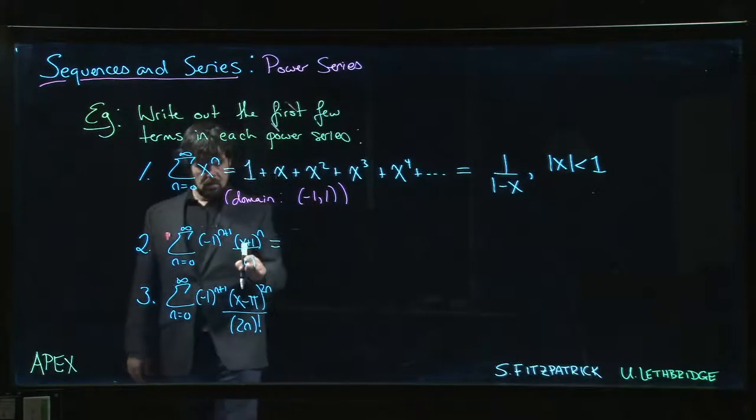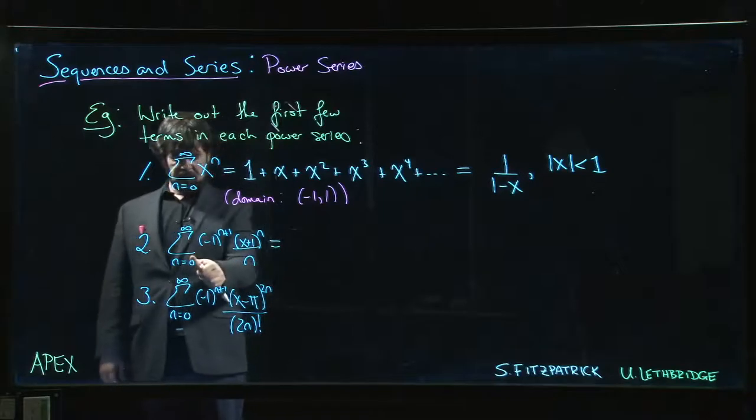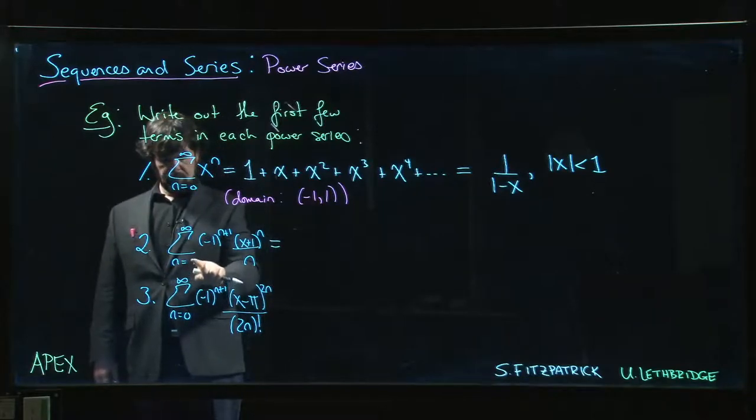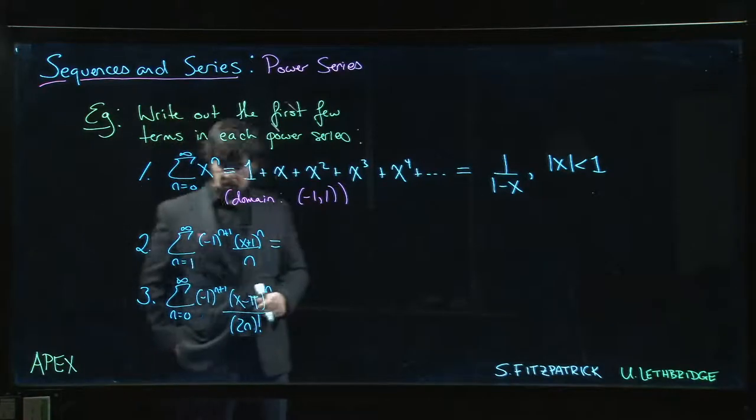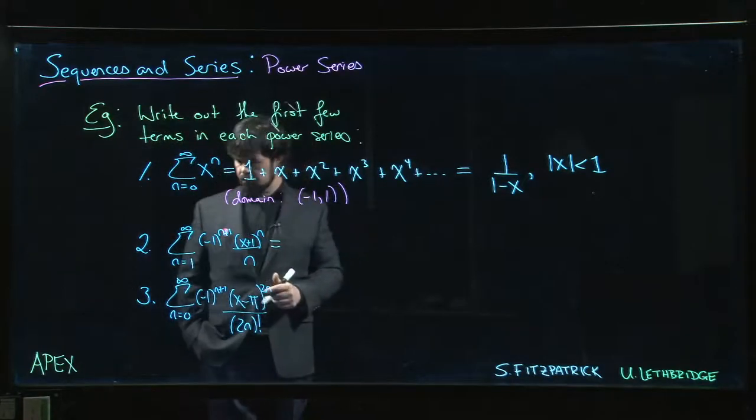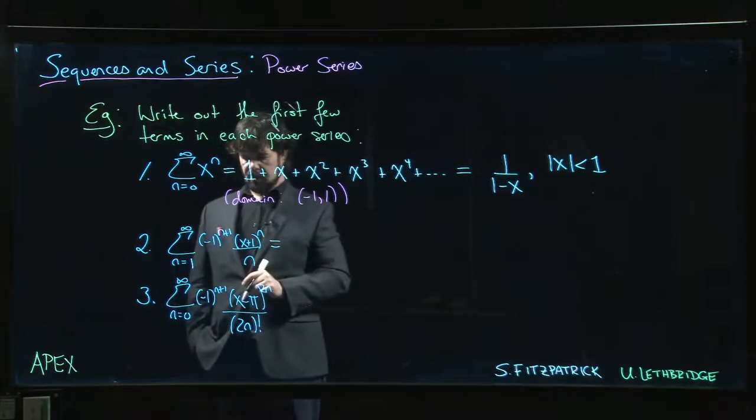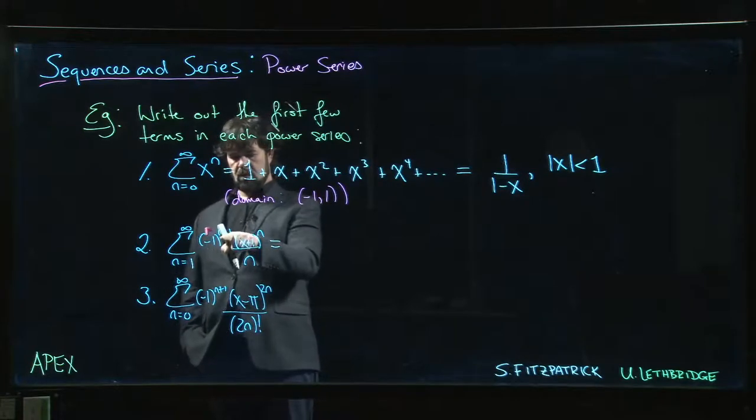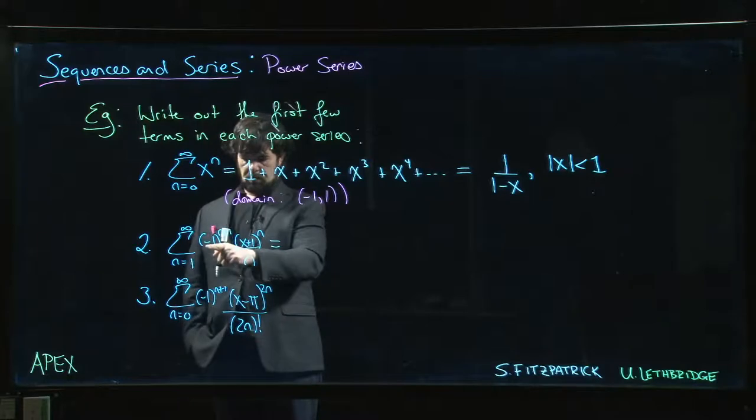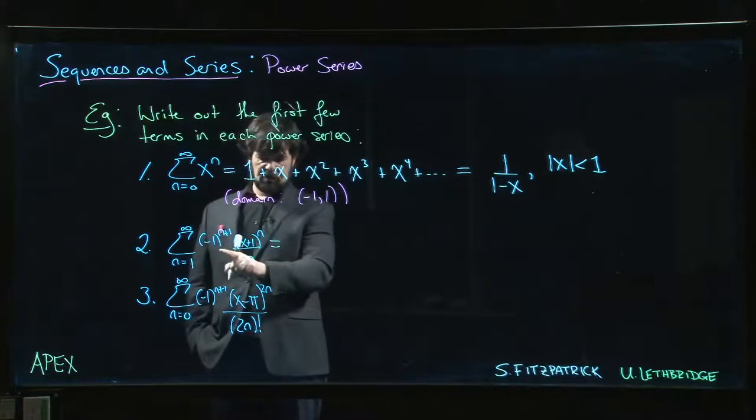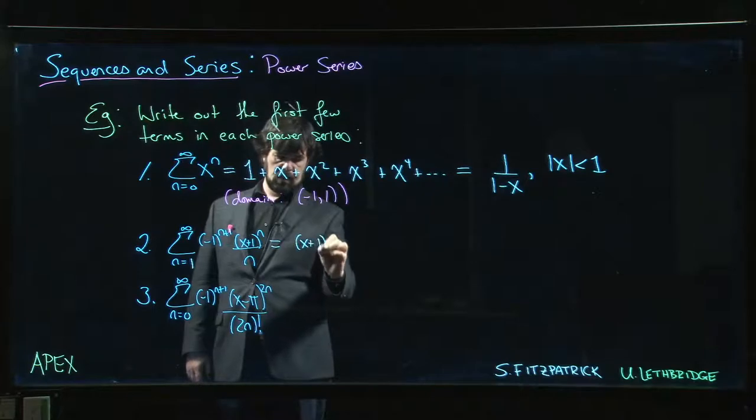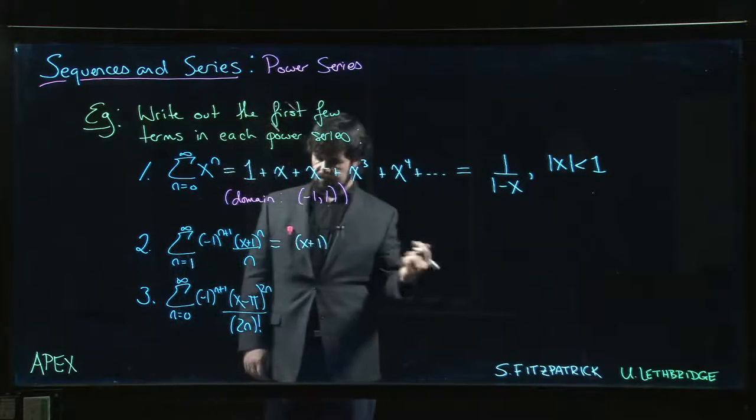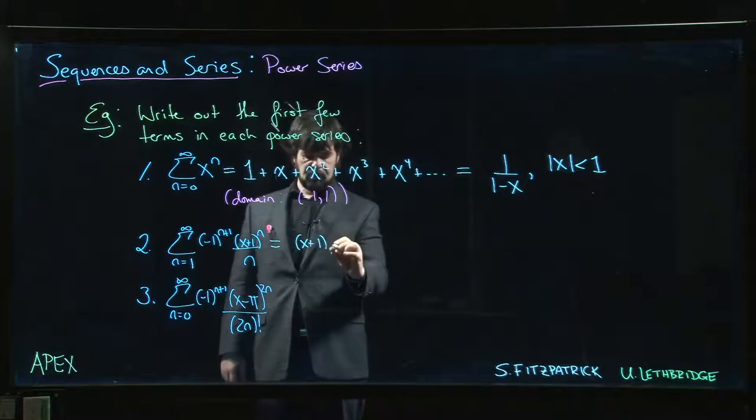Ah, n equals zero. That doesn't make any sense. This one better start at n equals one. Can't divide by zero. So we start at n equal to one. Start plugging in values for n. So if n is equal to one, one plus one is two minus one squared. So the first term is positive. So we have x plus one to the one. Divide by one. So we'll just write that as x plus one.